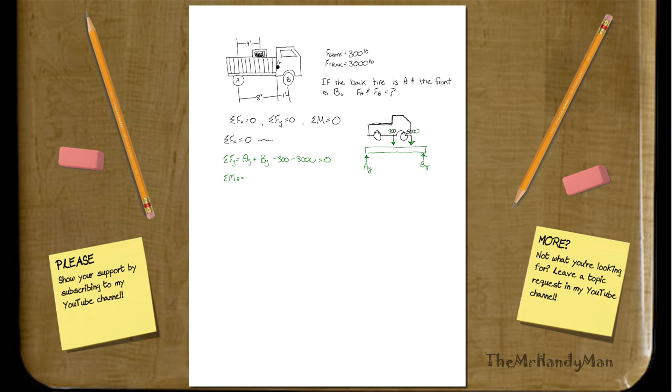I'll just do a moment at A again. Why not? So basically, the crate itself is going to be only 4 feet away, according to the picture above. So 4 feet times negative 300. It's negative 300 because it's a force going down.